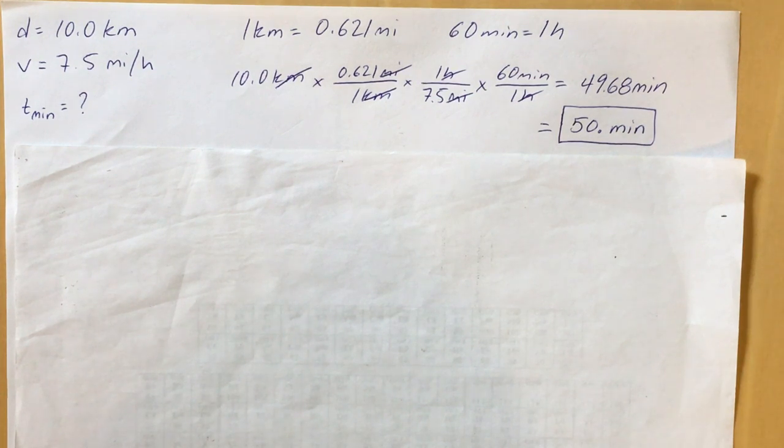So you start with your 10 kilometers, put that in the numerator and multiply that by your first conversion factor. You got to put the kilometer units in the bottom, and of course the number that goes along with those kilometer units is one, and then the appropriate miles is 0.621 up in the numerator.